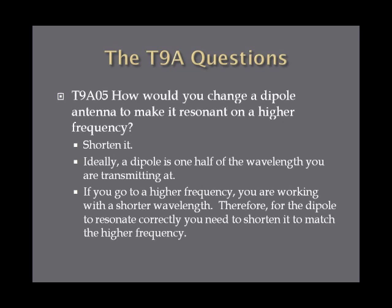How would you change a dipole antenna to make it resonant on a higher frequency? The answer is to shorten it. Ideally a dipole is one half of the wavelength you are transmitting at — if you are transmitting on the 80-meter band, your dipole will be about 40 meters. If you go to a higher frequency like 20 or 10 meters, you are working with a shorter wavelength, so you shorten the dipole. For a 20-meter band, you would want a 10-meter-long dipole.